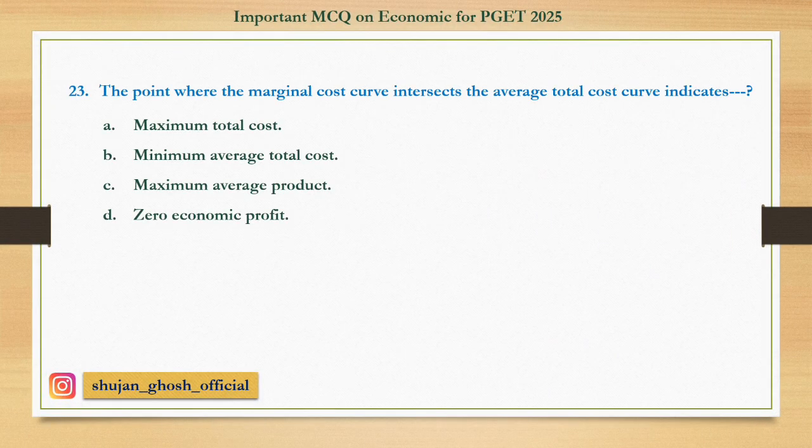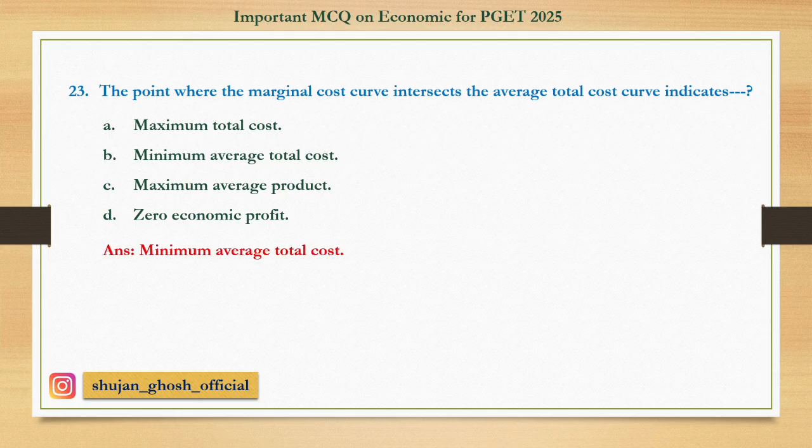Question number twenty-three: The point where the marginal cost curve intersects the average total cost curve indicates — option A: maximum total cost; B: minimum average total cost; C: maximum average product; D: zero economic profit. Answer: minimum average total cost.